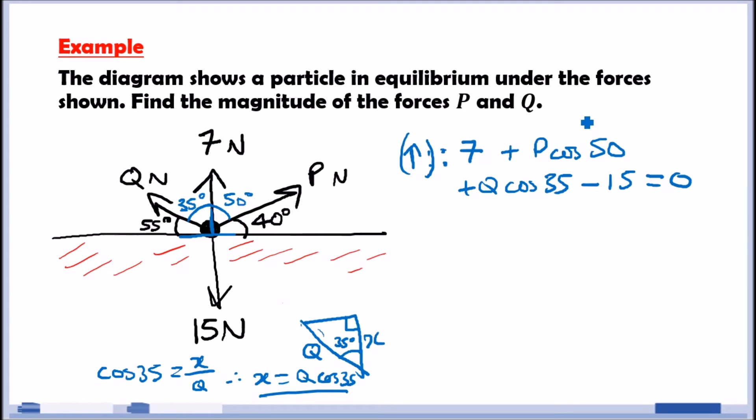We're going to do forces to the right-hand side. This would give us the horizontal. This means the right is positive. This implies that 7 and 15 is 0 because they're perfectly vertical. Perfectly vertical means you don't use it. So, to the right, what do we have? We have P and it's 40 to the horizontal. So, it'll be P cos 40. Likewise, Q is in the other direction. So, it'll be negative Q cos 55. And this one equals 0.